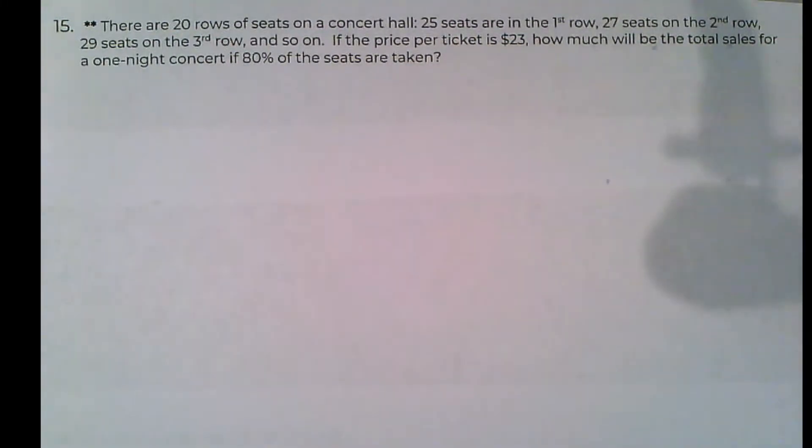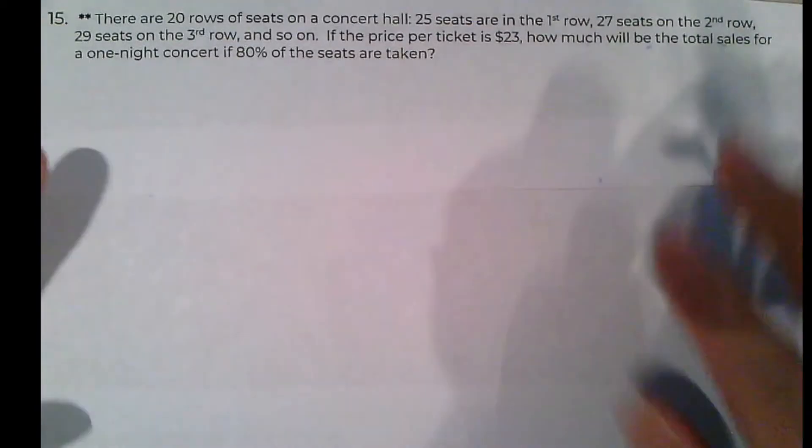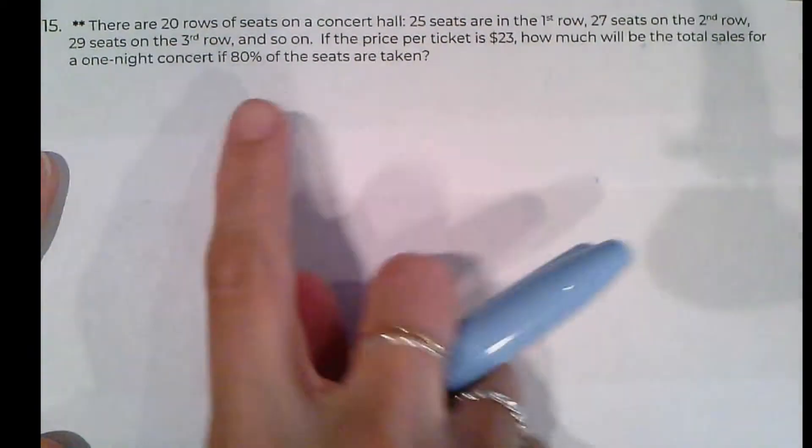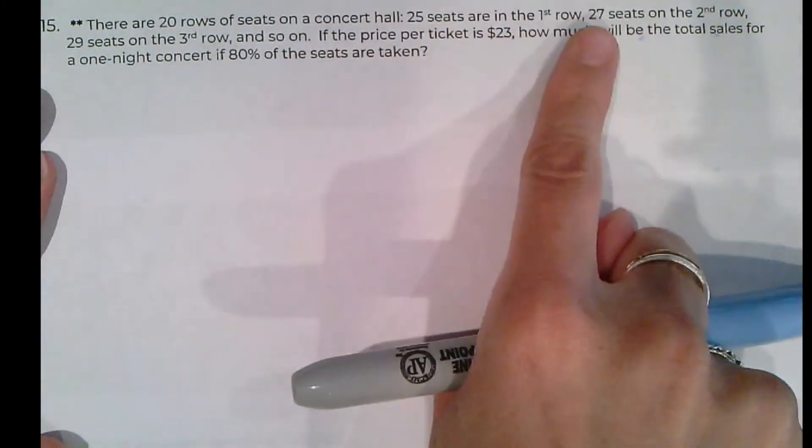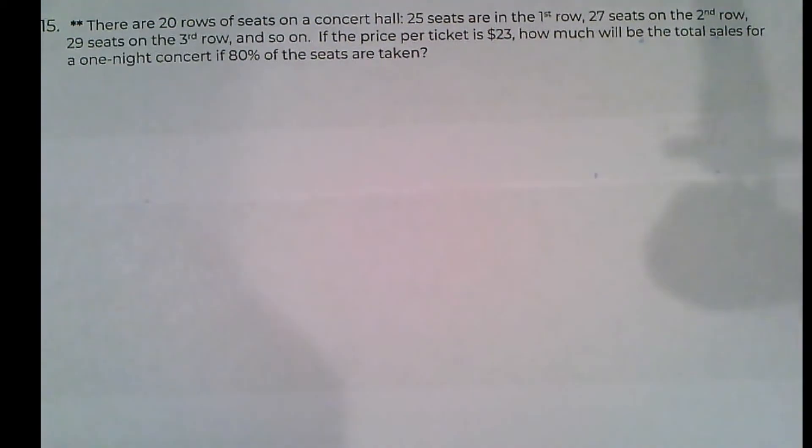So number 15 is the last question on the sample exam. Again, we see what's clearly an arithmetic or geometric sequence problem. We're told that there are 20 rows of seats in a concert hall, 25 in the first, 27 in the second, 29 in the third, and so on.